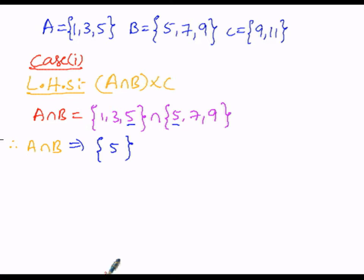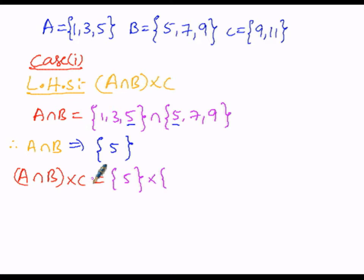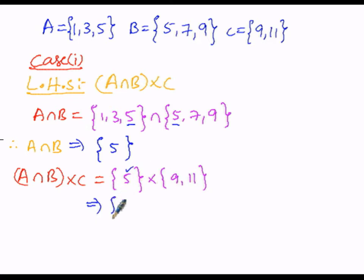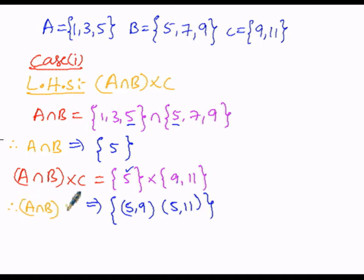Now, overall we have to find A intersection B cross C. A intersection B is {5}, and set C elements are {9, 11}. We find the Cartesian product of A intersection B and C. That gives us the ordered pairs: (5, 9) and (5, 11). Therefore, A intersection B cross C equals {(5, 9), (5, 11)}. Let us call this equation number 1, from Case 1.